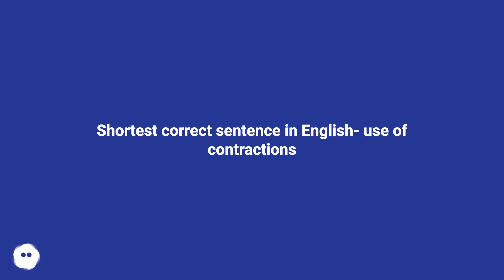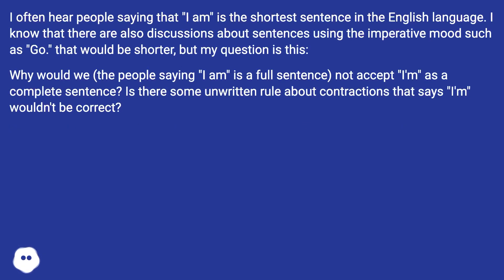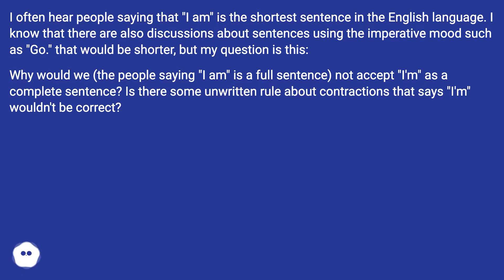Shortest correct sentence in English: use of contractions. I often hear people saying that 'I am' is the shortest sentence in the English language. I know that there are also discussions about sentences using the imperative mood, such as 'go,' which would be shorter, but my question is this.